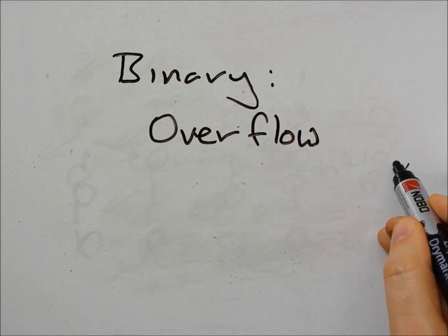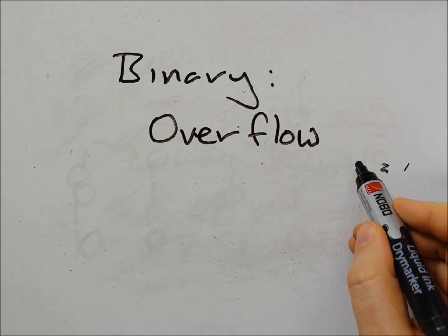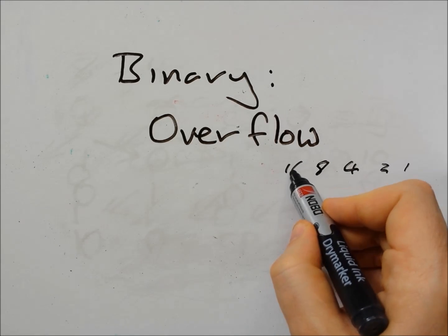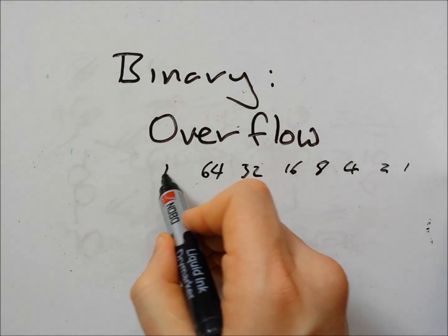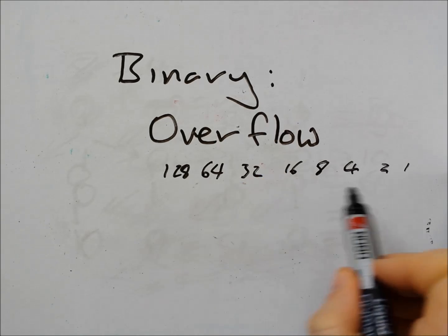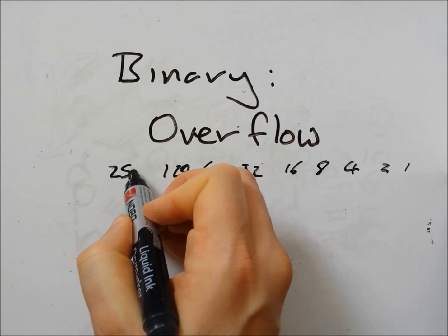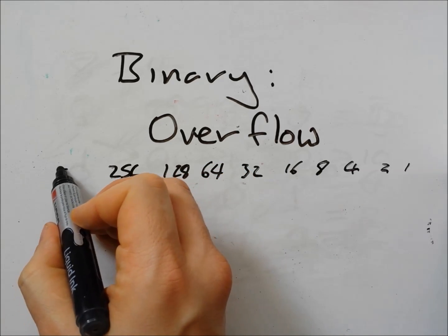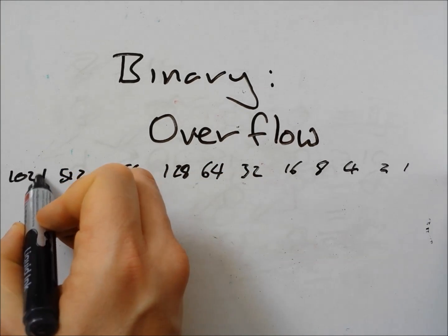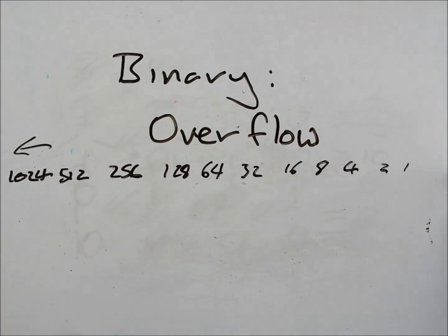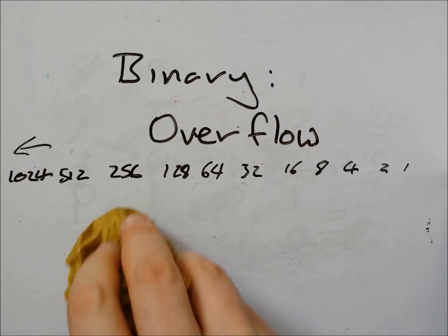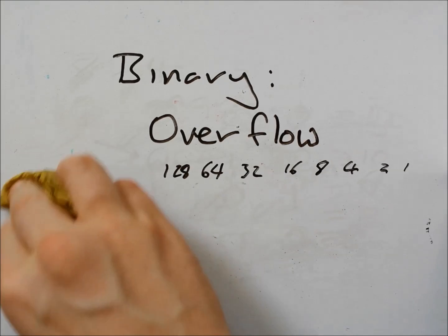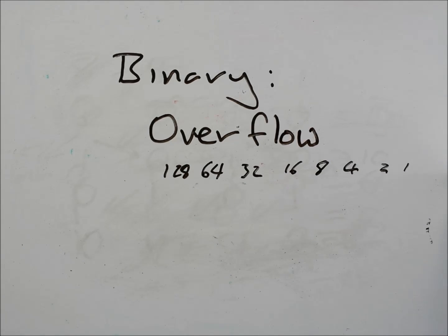So it has 1, 2, 4, 8, 16, 32, 64, 128 — that's the first 8 bits — and then it carries on: 256, 512, 1024, all the way up to the end. So we have 16 different bits. We're just going to look at 8 bits for today, so I'm going to get rid of the extra bits. There are our 8 bits.